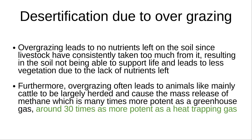Overgrazing leads to no nutrients left on the soil, which results in it not being able to support life and leads to less vegetation. Furthermore, overgrazing often leads to animals, mainly cattle, being largely herded and causes the mass release of methane, which is many times more potent as a greenhouse gas.